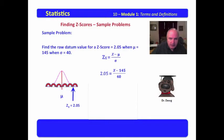Now all we have to do is algebraically solve this problem. We would multiply both sides by 40, and we come up with 82 equals X minus 145. Add 145 to both sides, and we find that our raw datum is equal to 227. Very interesting. Just a little simple algebra. That's all it is.